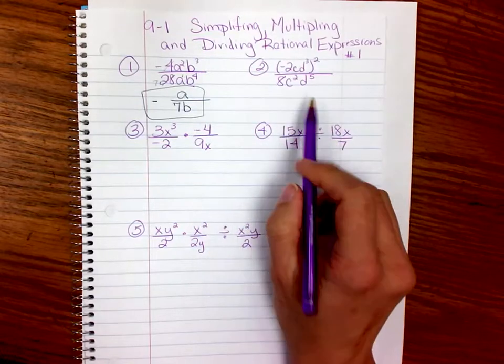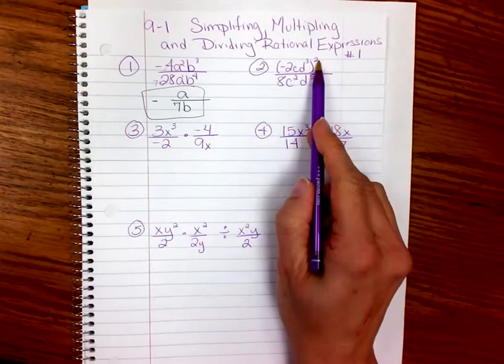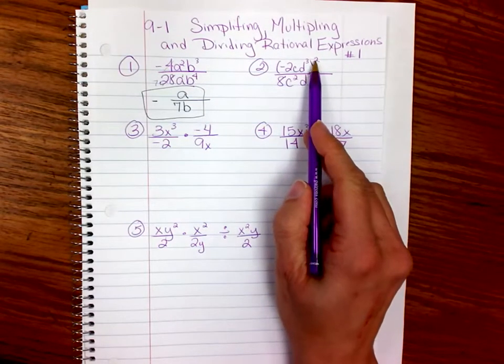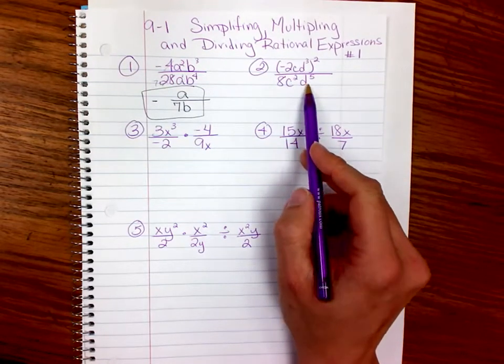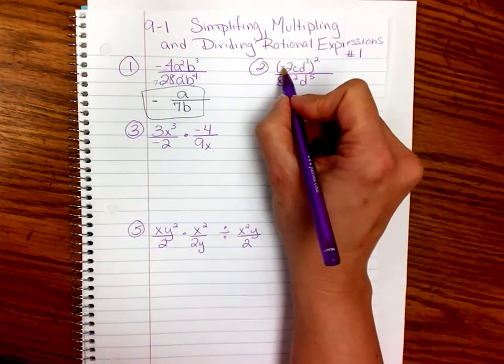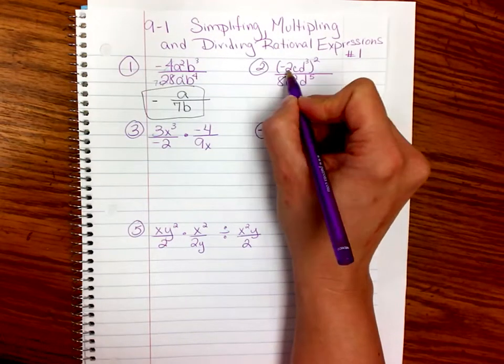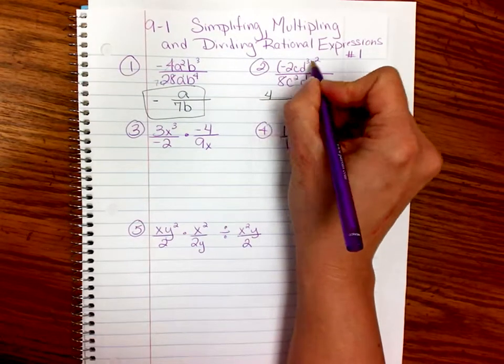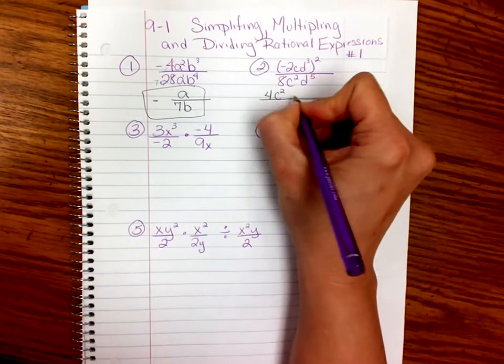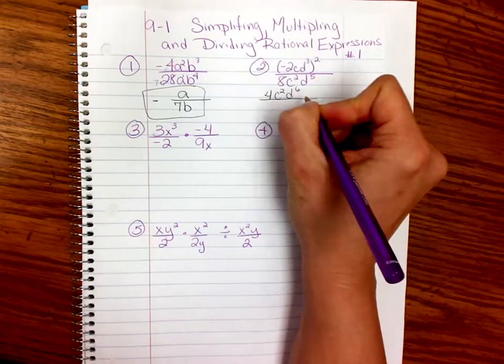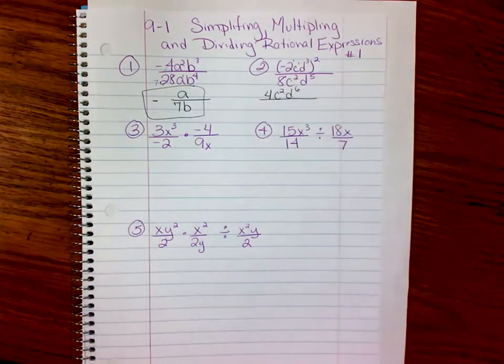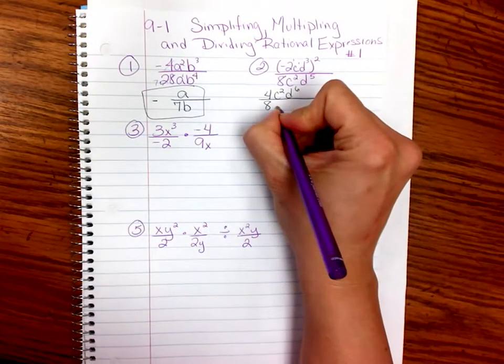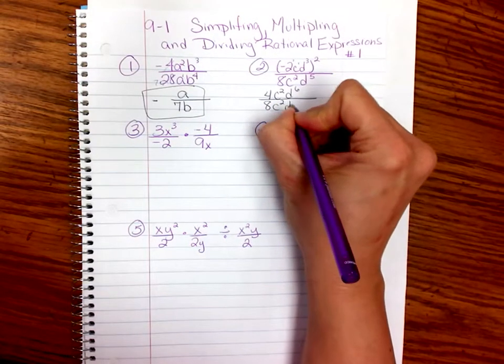Now in the next one, to simplify, you'll notice that there's a parenthesis with a squared outside it in the top. You have to take care of that before you start canceling anything. So that's really important. So we're going to square a negative, which is a positive. We're going to square the 2, which is a 4. c squared and d cubed squared. Remember that rule is to multiply the exponents. And you can put the ones for exponents that are invisible if that helps you.